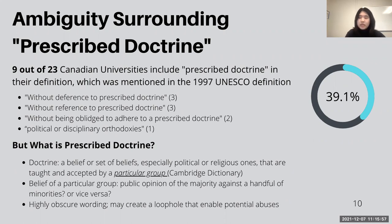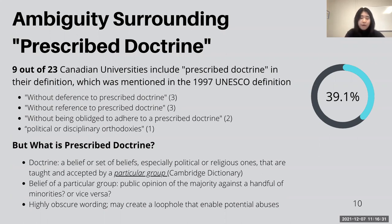It should be mentioned that the term 'prescribed doctrine' is a highly ambiguous term in itself. According to the Cambridge Dictionary, doctrine refers to a belief or set of beliefs, especially political or religious ones, that are taught and accepted by a particular group. But what do they mean by a belief of a particular group — could it be a public opinion of the majority against a handful of minorities, or vice versa? Ultimately, the term prescribed doctrine is obscure wording that may create a loophole enabling potential abuses in the role of academic freedom.